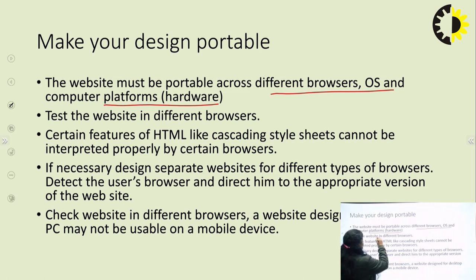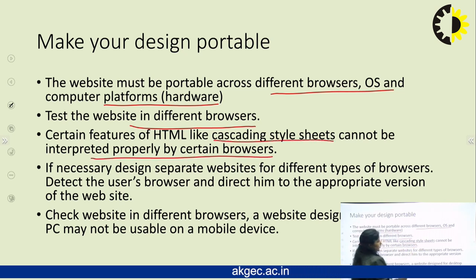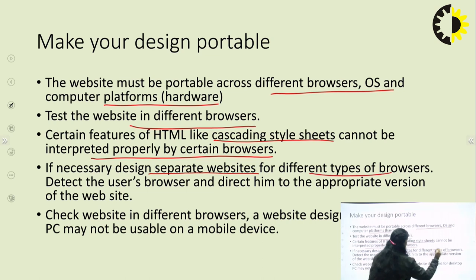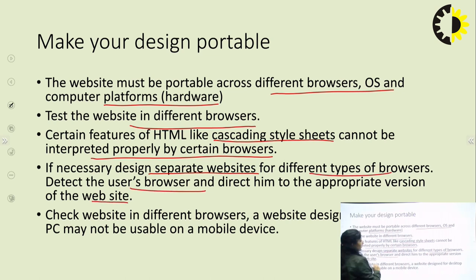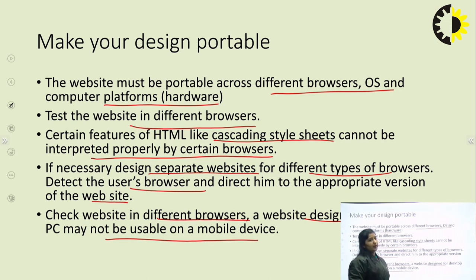We will test the website in different browsers to determine whether the website is portable. Cascading Style Sheets cannot be interpreted properly by certain browsers — CSS works differently across different browsers and not all browsers support it. If necessary, we can design separate websites for different types of browsers so the user is directed to the appropriate one. We check the website in all browsers, since a design for the desktop PC may not be usable on a mobile device.